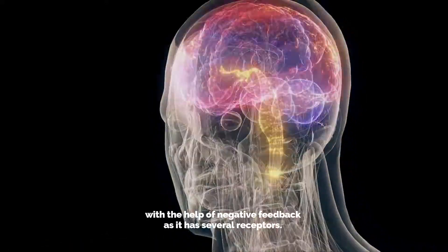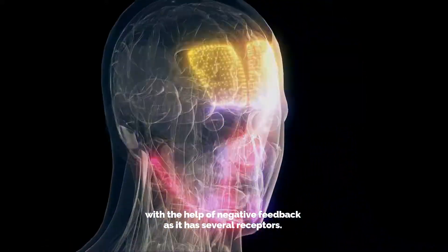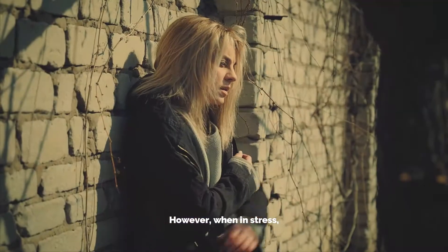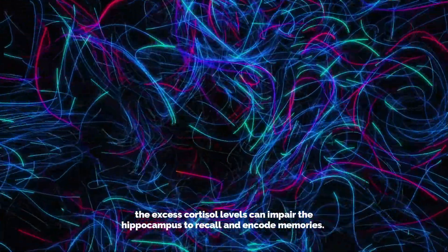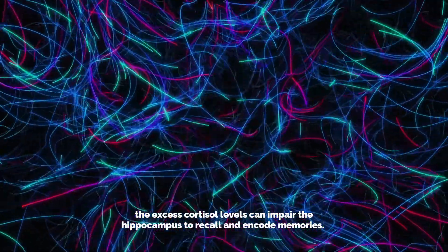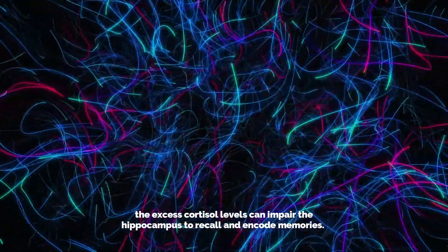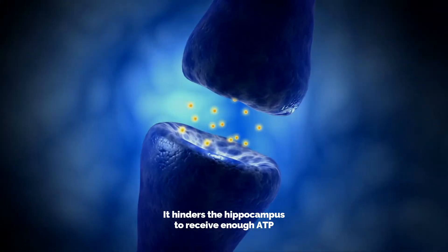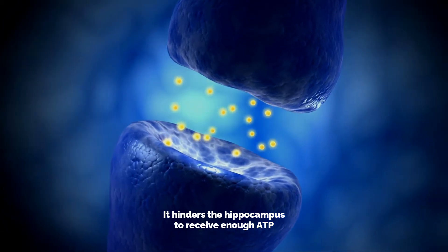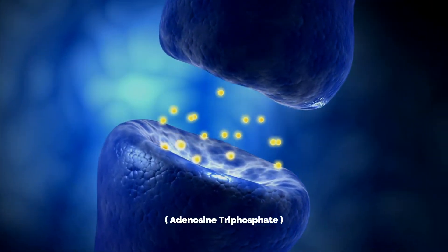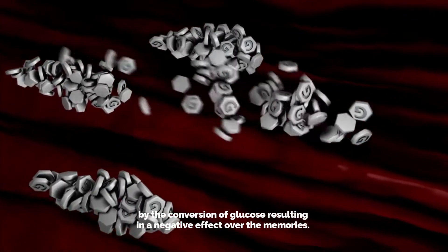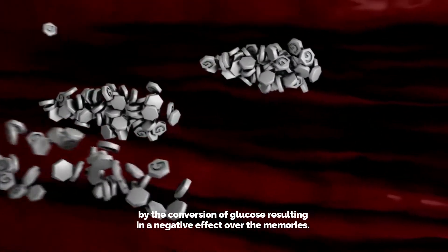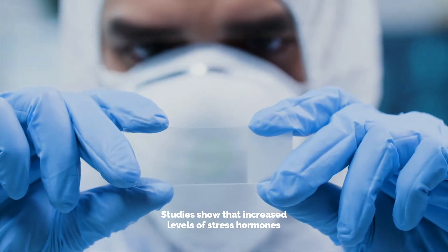When a person undergoes normal situations, the hippocampus controls the regulation of cortisol through negative feedback as it has several receptors. However, when in stress, excess cortisol levels impair the hippocampus's ability to recall and encode memories. It hinders the hippocampus from receiving enough ATP or adenosine triphosphate by the conversion of glucose, resulting in a negative effect on memories.